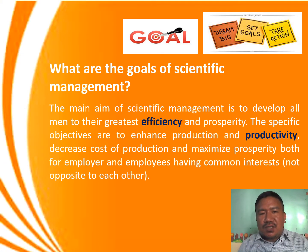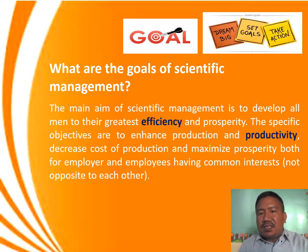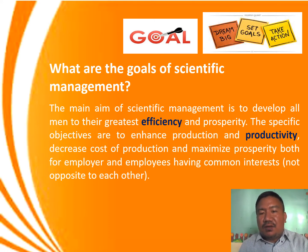What are the goals of scientific management? The main goal of scientific management is to develop all men to their greatest efficiency and prosperity. The specific objectives are to enhance production and productivity, decrease the cost of production, and maximize prosperity, both for the employer and the employees having common interests.